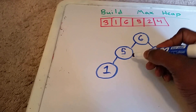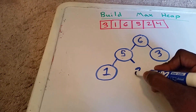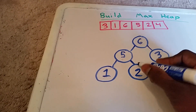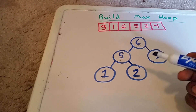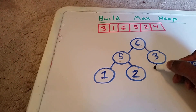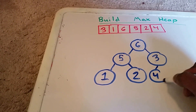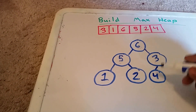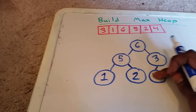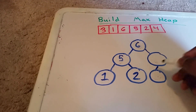So next up, we go to get the element 2 and we add it. Is 2 less than or equal to its parent? It is, so we're good to go. And then last, we add the element 4. Is 4 less than or equal to its parent? No, it's not. So we have to swap the 4 and the 3.